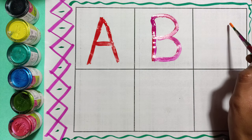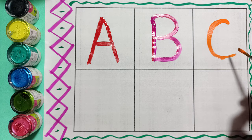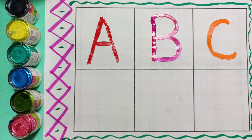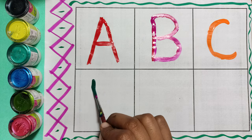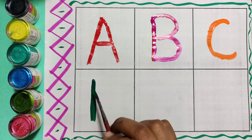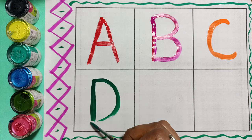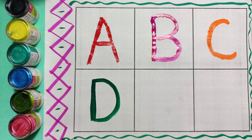Orange color. D. D for dog. Green color. E. E for elephant.